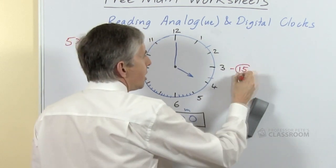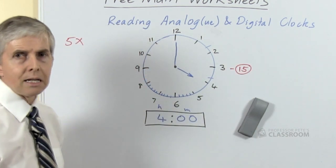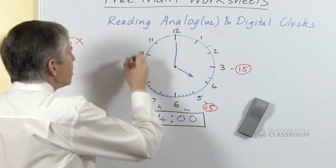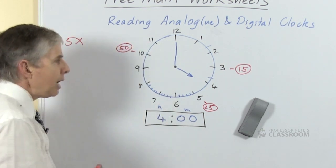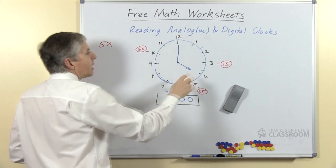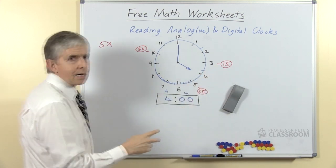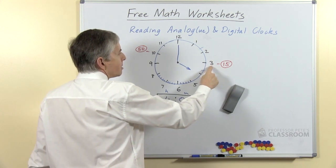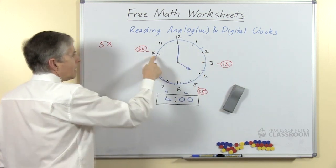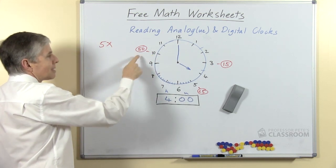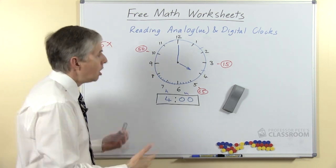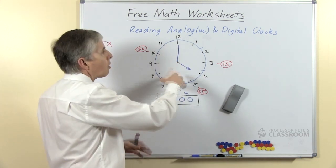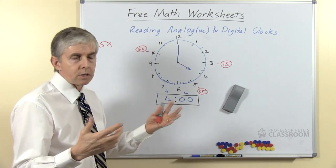When the minute hand points at the three, we know that's fifteen minutes past the hour. When it points at the five as another example it's twenty-five, at the ten it's fifty. Now each of those numbers is in the five times table, and it's equal to the number of hours multiplied by five. So at the three, three fives is fifteen, that is fifteen minutes. At the ten, ten times five is fifty, and that's the number of minutes. Obviously that's because there are twelve hours located on the clock, and there are sixty minutes, and sixty is twelve times five.